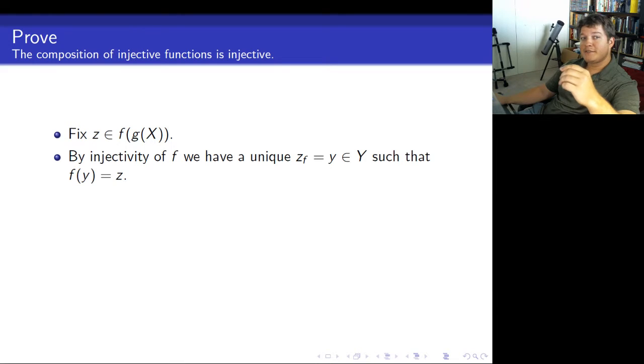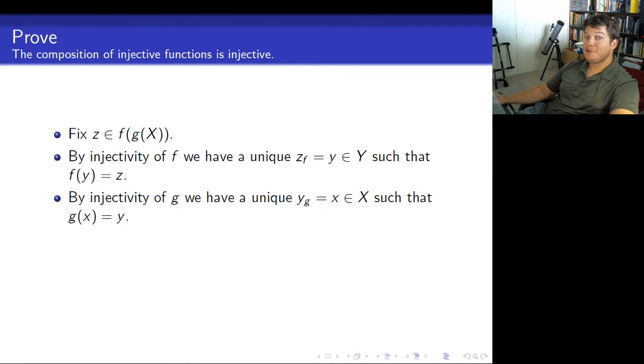By the injectivity of f, there's a unique point. We'll call it z sub f, just so you understand. This is dependent on z and f. It's just a pullback. And we're going to say that that's y in y, such that f of y equals z. This is done as unique. There's only one way to do this. Again, by the injectivity of g, we have a new y sub g. So, it's the pullback of y, which we call x in x, such that g of x equals y.